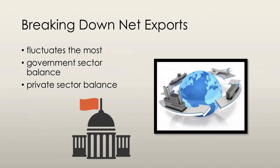Net exports is essentially the export of goods minus the import of goods into our country. The government sector balance is net taxes minus government expenditure on goods and services. If this is positive, then the surplus is lent to other sectors.